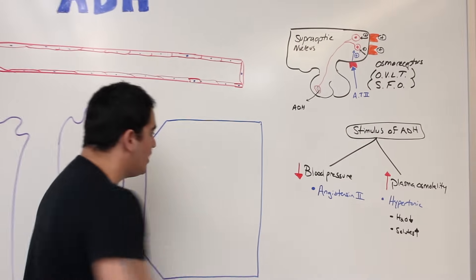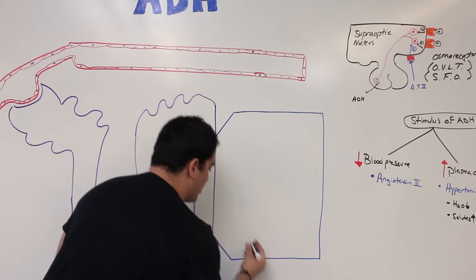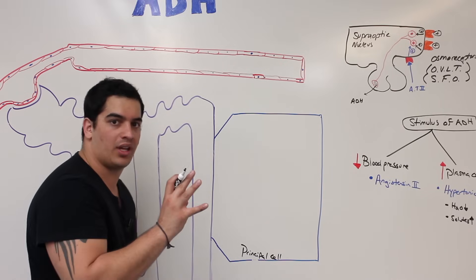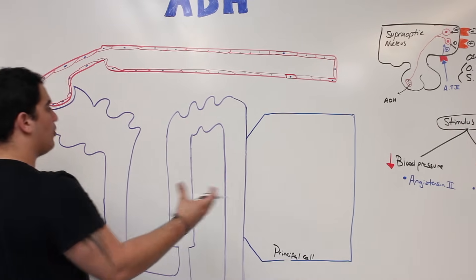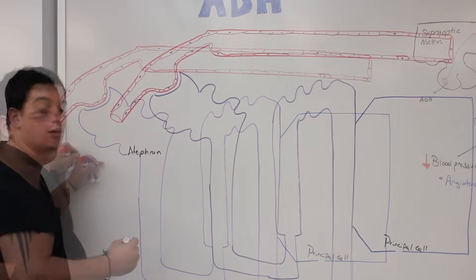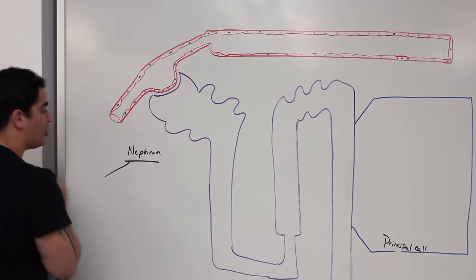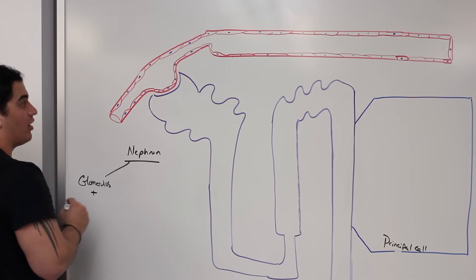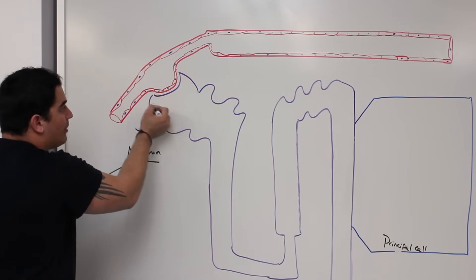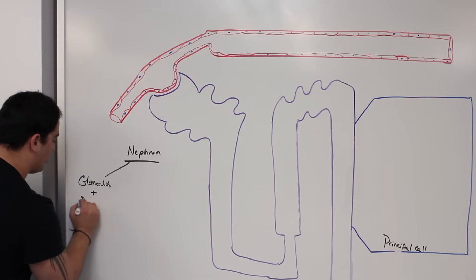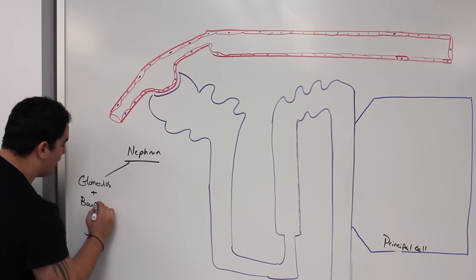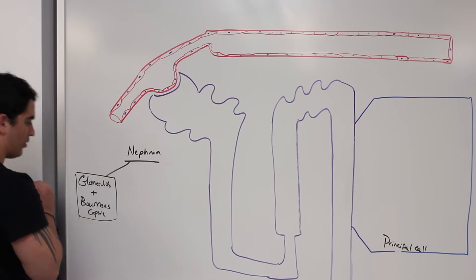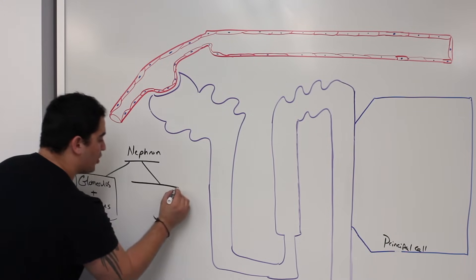So what is this ADH going to do? There's a cell called a principal cell, located within the collecting duct in the kidneys. What I'm looking at here is a part of a nephron. The nephron is made up of two chunks: one is a tuft of capillaries called the glomerulus, and the other is a U-shaped structure called Bowman's capsule. The Bowman's capsule and the glomerulus make up the renal corpuscle. The other component is the kidney tubules.